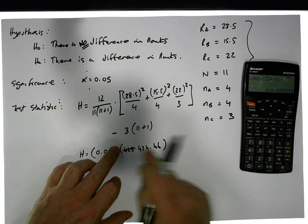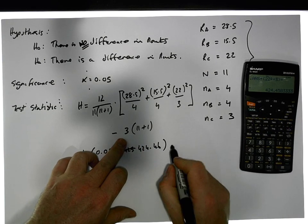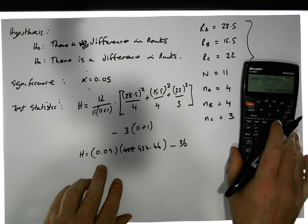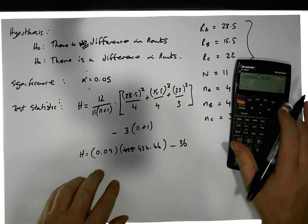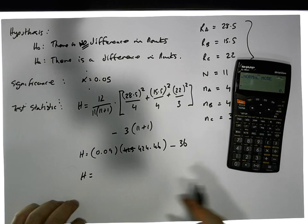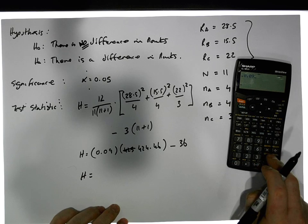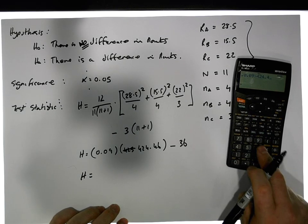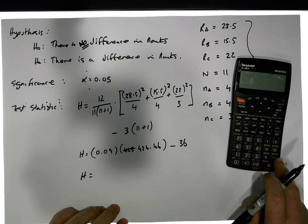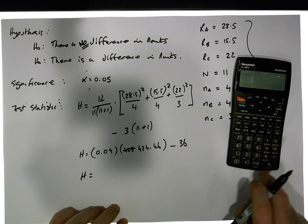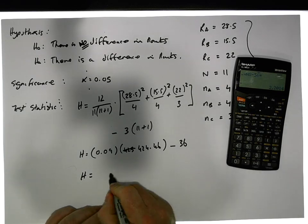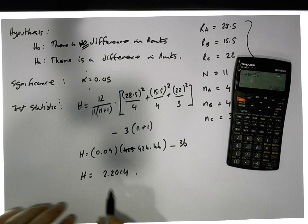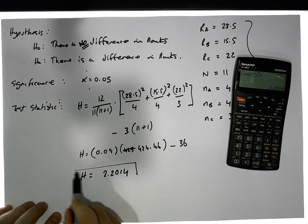We subtract minus 36 (which is 3 times 12). So the test statistic H = 0.09 times 424.46, minus 36, which gives us a test statistic of H = 2.2014. This is a measure of the magnitude of the differences in the ranks across the groups.